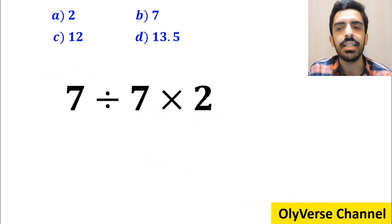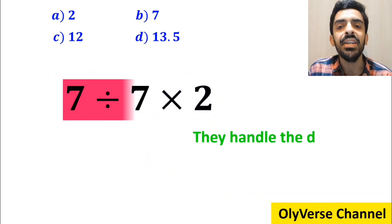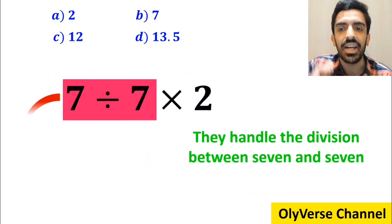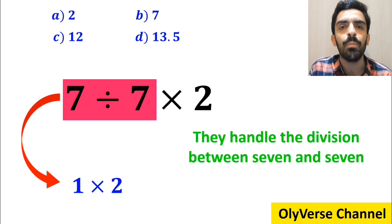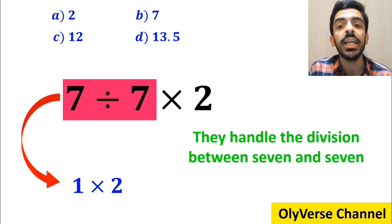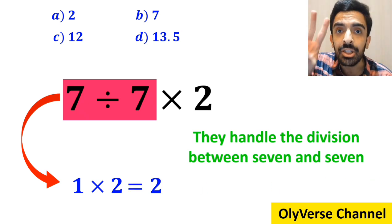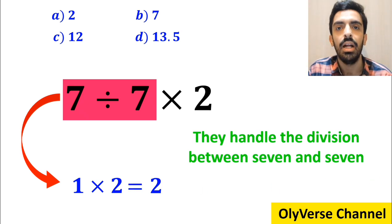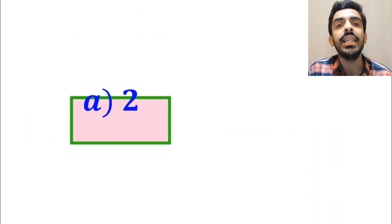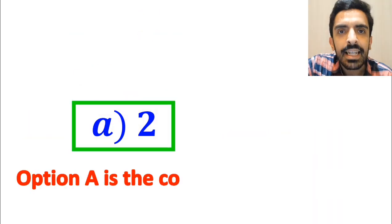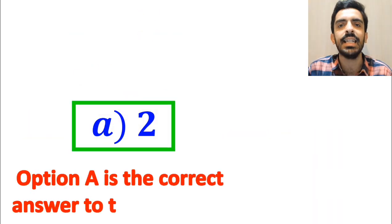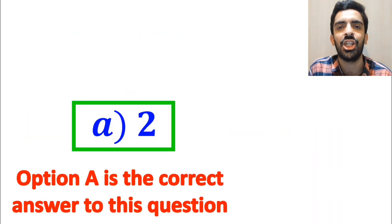In the final step, they handle the division between 7 and 7, and write this expression as 1 multiplied by 2, which eventually gives them the answer 2. Without any hesitation, they quickly say that option A is the correct answer to this question.